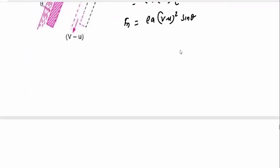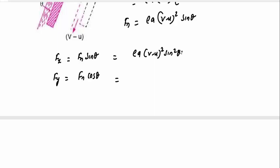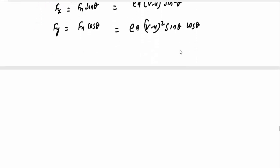Next, we calculate Fx and Fy, where Fx equals Fn sin theta and Fy equals Fn cos theta. This gives Fx equal to rho A (v minus u) the whole square sin squared theta, and Fy equal to rho A (v minus u) the whole square sin theta cos theta. The work done per second is Fx into u, which is rho A (v minus u) the whole square sin squared theta into u.